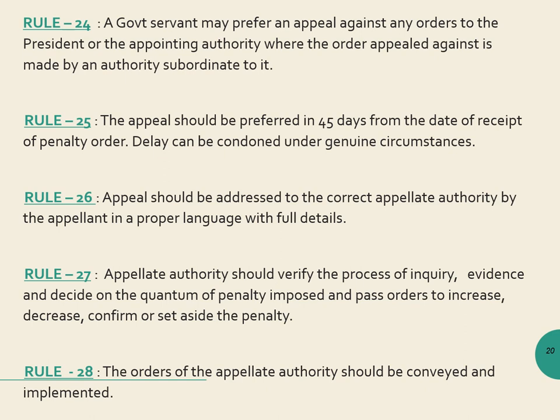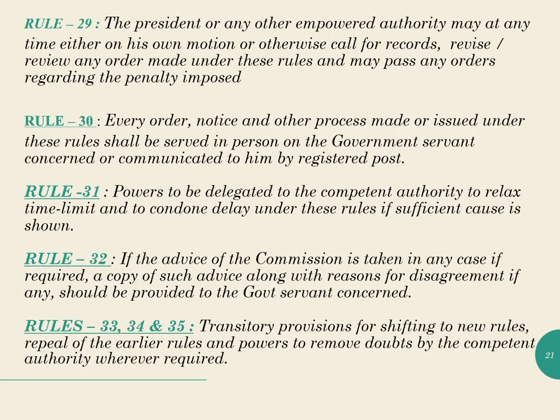Rule 28 states that the orders passed by the appellate authority must be communicated and implemented — this is mandatory. Rule 29 says that the President and any other empowered authority can call for and revise a penalty order. Rule 30 is also briefly mentioned.